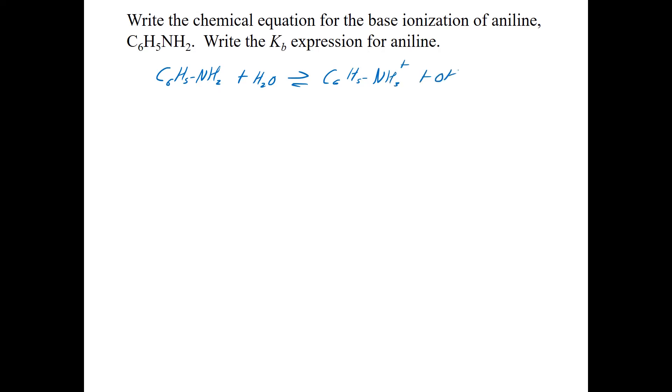So that's my base ionization reaction. And then Kb is going to be the C6H5NH3+ times the hydroxide ion concentration divided by that of the initial base, which is C6H5NH2 concentration. So very similar to that of a Ka.